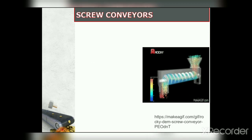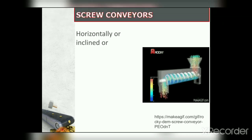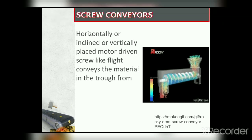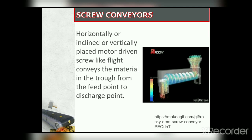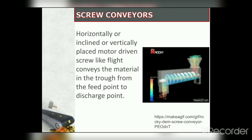The next conveyor type is the screw conveyor. Its principle involves a horizontally or vertically inclined motor-driven screw-like flight that conveys material in a trough from the feed point to the discharge point. The basic elements are: trough system, flights and power supply, feeding arrangement, and discharge arrangement.